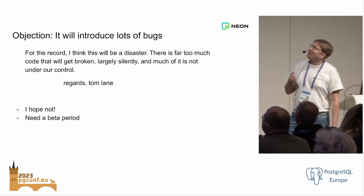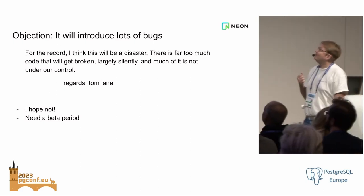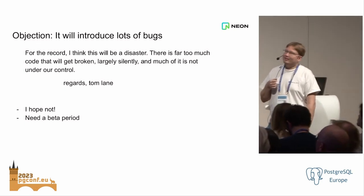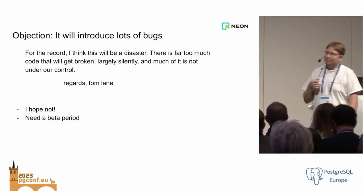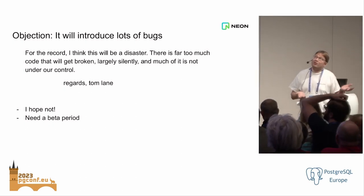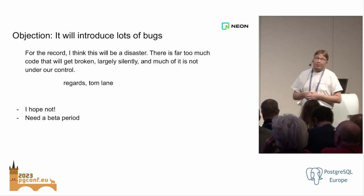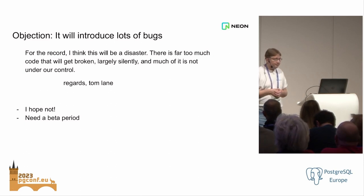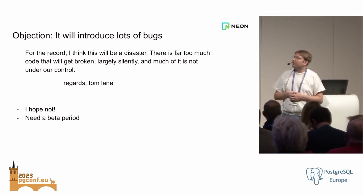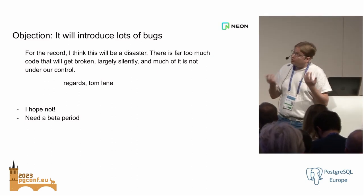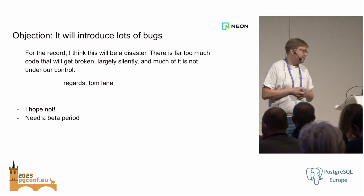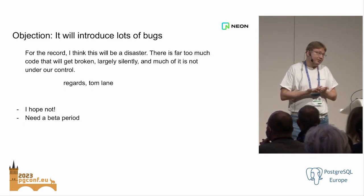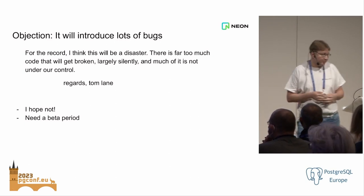The third objection is that Tom Lane raised this very early in the thread: it will be a disaster and there will be a lot of bugs that are hard to debug. Well, I hope not. This isn't rocket science — other people have done multi-threaded projects, and other big projects have gone through this transition. Yeah, I'm sure there will be bugs, but then we'll fix them. We will need some kind of beta period or mark it as experimental for a release or two, so that extensions and the whole ecosystem can catch up. If this turns out to be a disaster, then we won't do it — it's that simple.